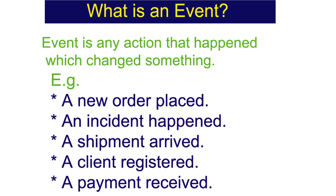In this situation, the generation of a new order — the placement of a new order — generates an event, and once that event is triggered, then different other systems and applications are intimated using event-driven architecture, to execute that order and to start the shipment of that order.